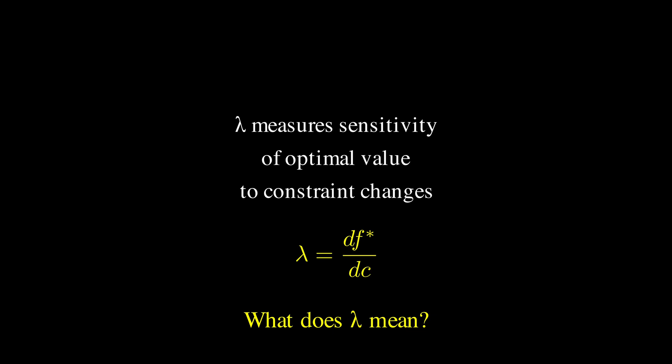Now you might wonder what this lambda parameter actually means beyond just being a mathematical tool. It turns out, lambda measures the sensitivity of your optimal value to changes in the constraint. Essentially, it tells you how much your maximum value would improve if you could relax the constraint slightly. This makes it incredibly valuable for deciding whether it's worth investing resources to loosen a constraint.